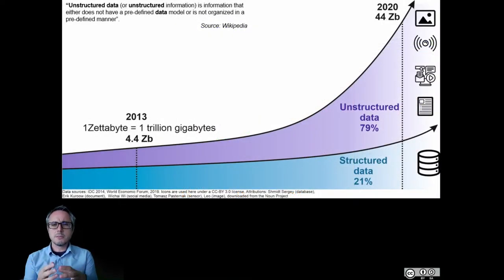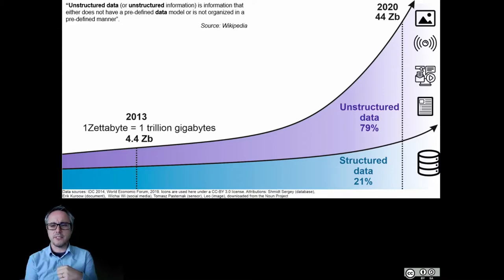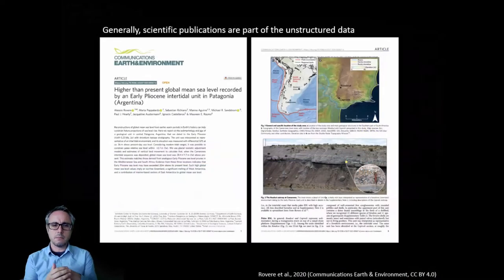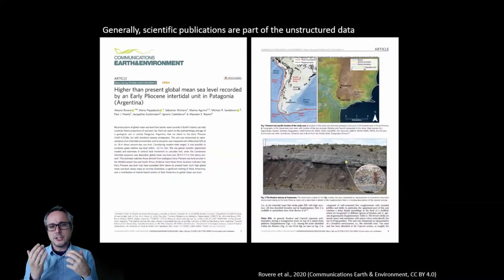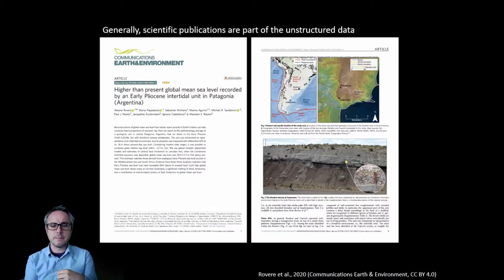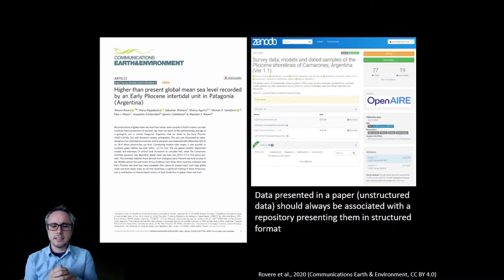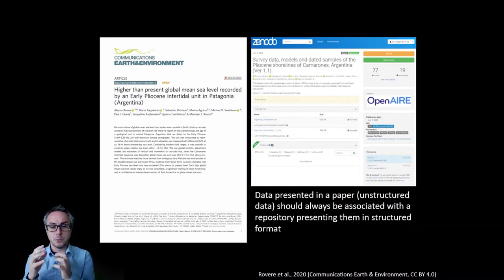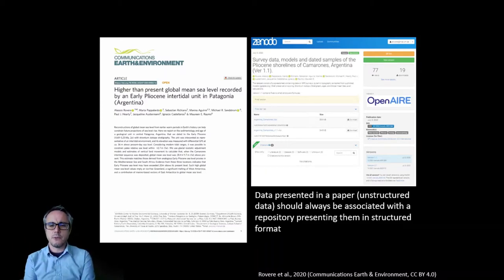This data is mostly unstructured — it's not organized in a database, or it doesn't have a predefined data model. Generally, scientific publications are also part of the unstructured data, unless they are connected to some repository containing databases that put the data into a structured framework.